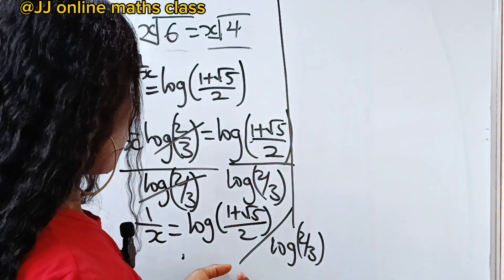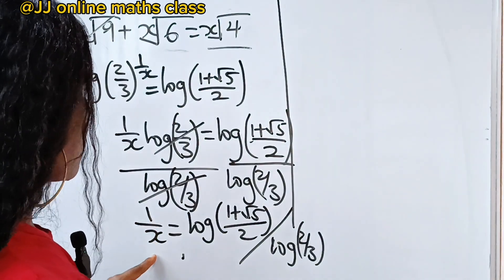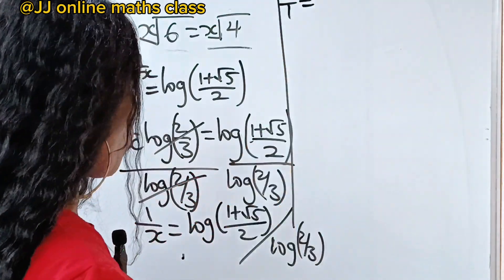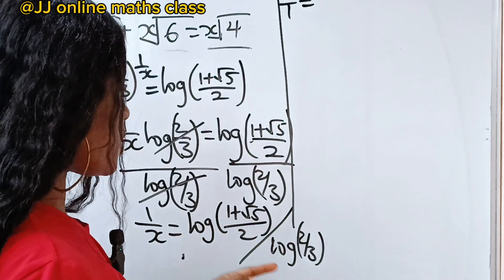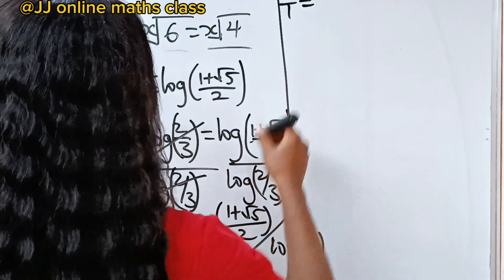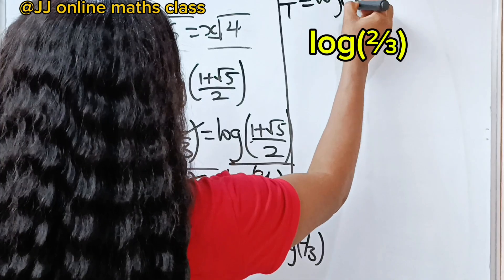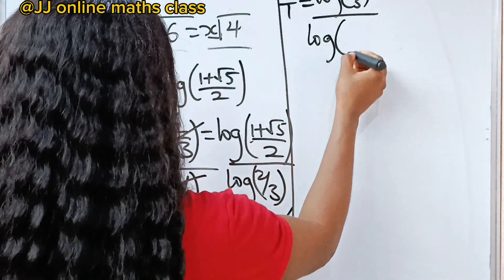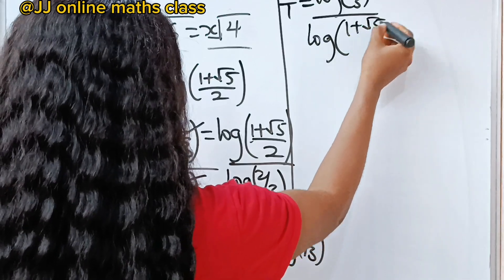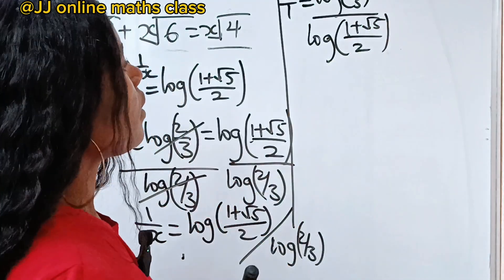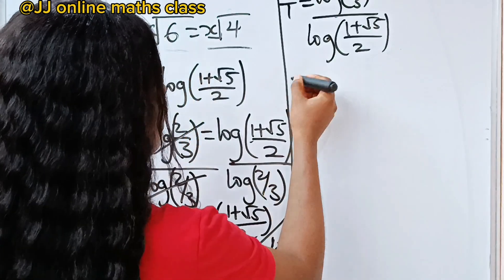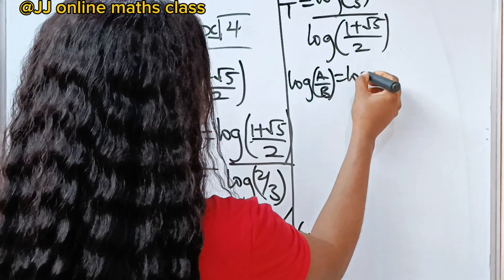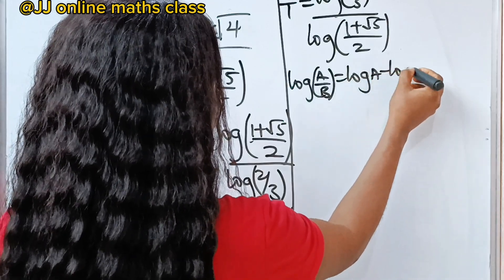So this is 1 over x. That means x over 1 — that is x — is going to equal the inverse: log of 2 over 3 divided by log of 1 plus root 5 over 2. Now recall the log quotient rule, that log of a over b equals log a minus log b. So if we introduce that here, x equals log 2 minus log 3, divided by log of 1 plus root 5 minus log 2.